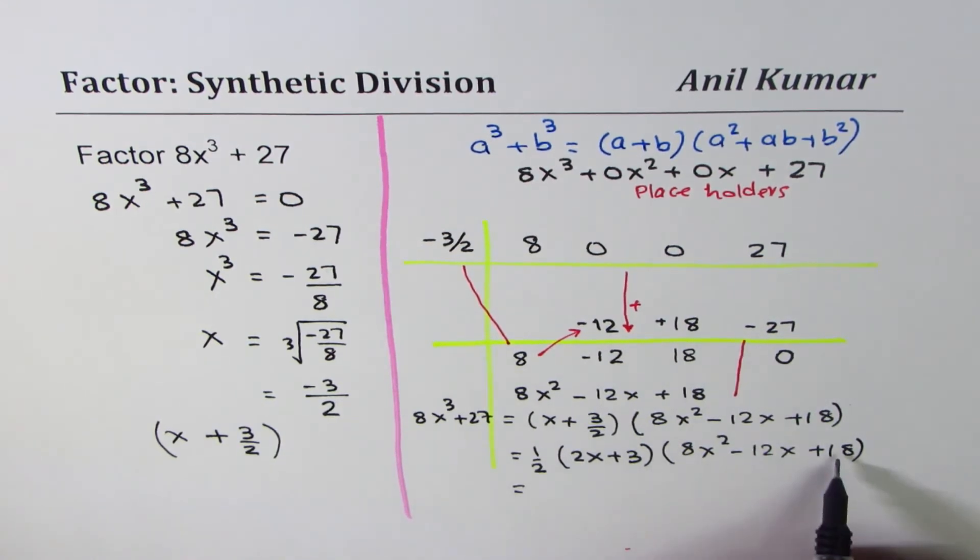Now here you can divide all the terms by 2, so we get our result which is (2x + 3) times (4x² - 6x + 9). That is the final result and it matches with your formula.